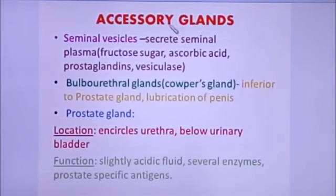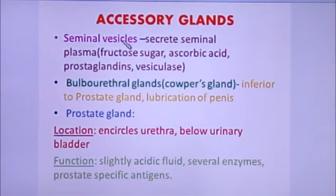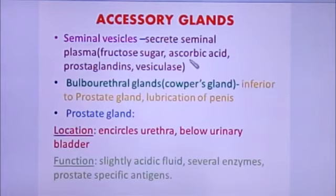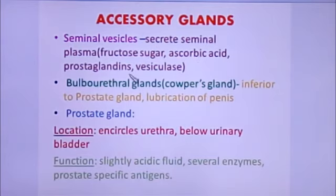Accessory glands include seminal vesicles. These seminal vesicles secrete seminal plasma, which is an alkaline fluid containing fructose sugar, ascorbic acid, prostaglandins, and an enzyme called vesiculase — a coagulating enzyme whose function is to increase the motility of the sperm.